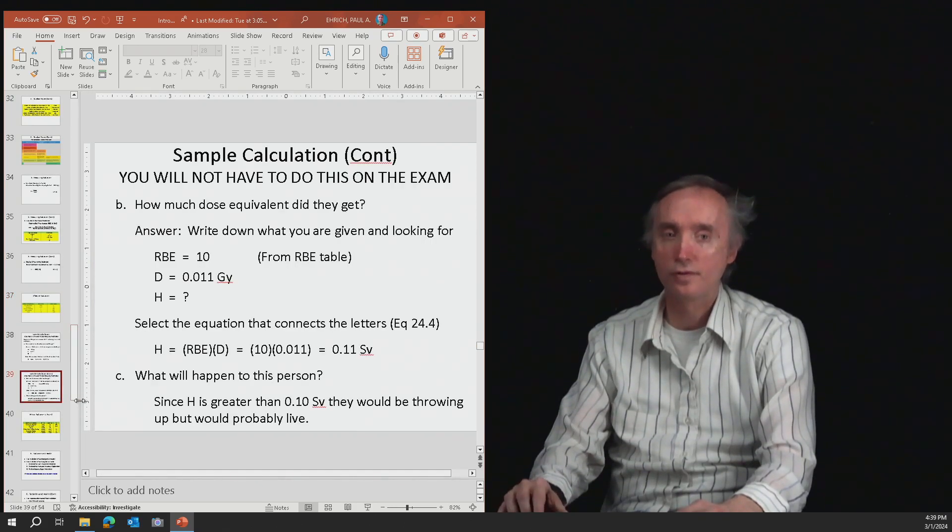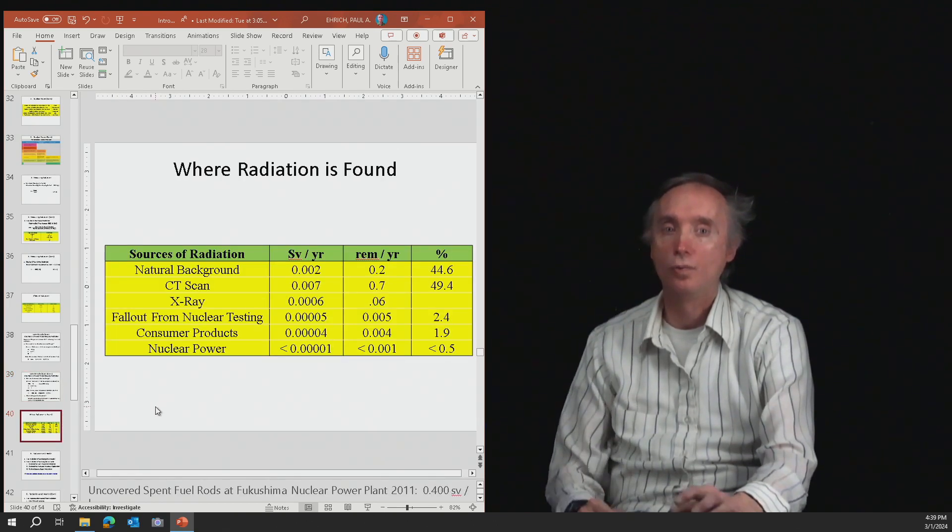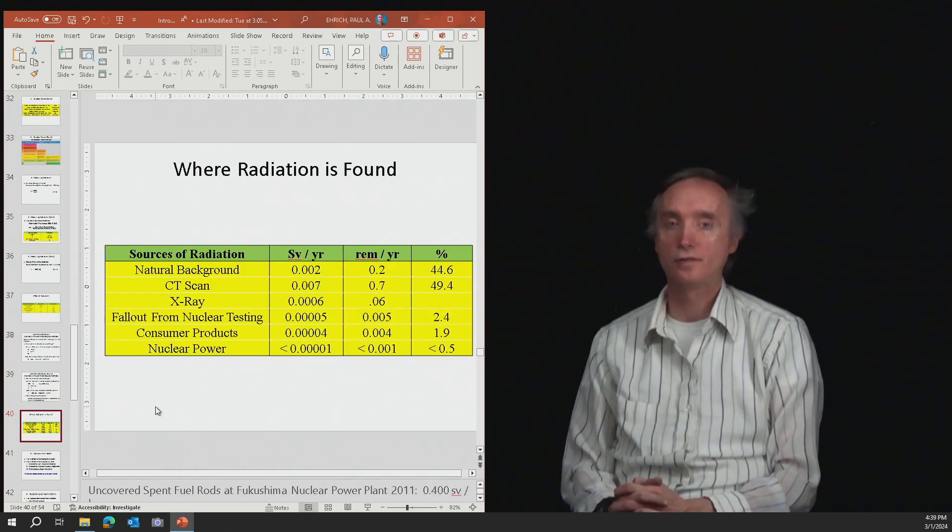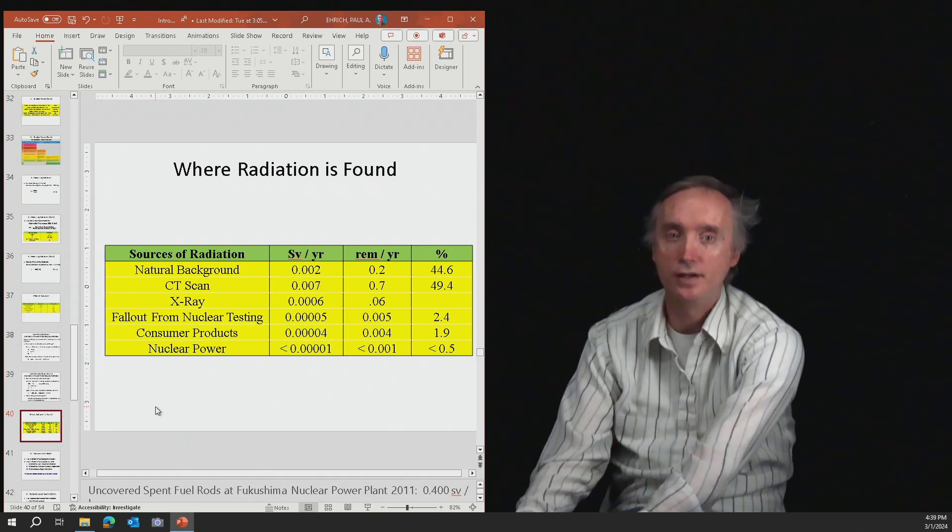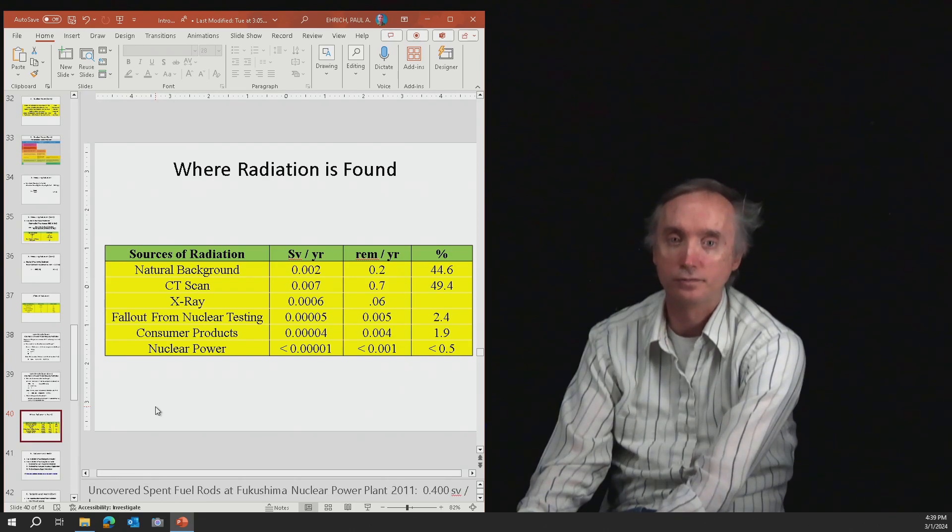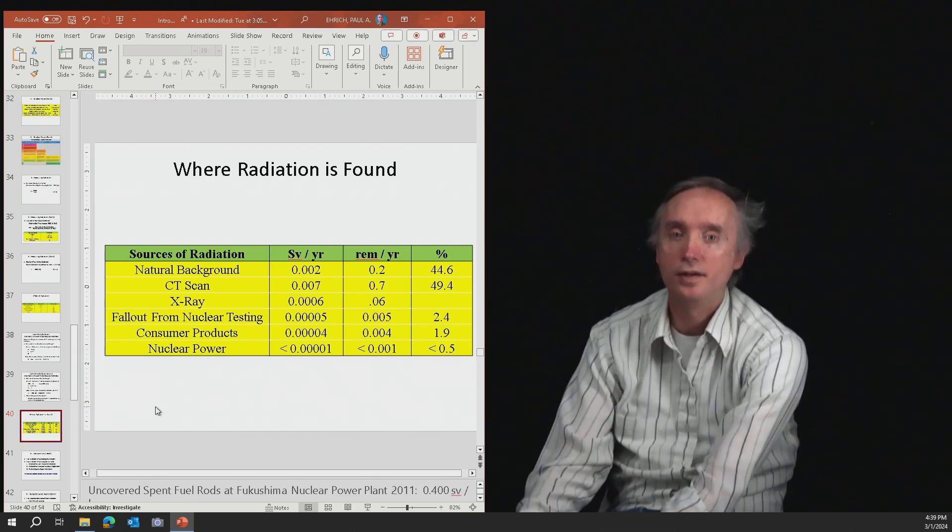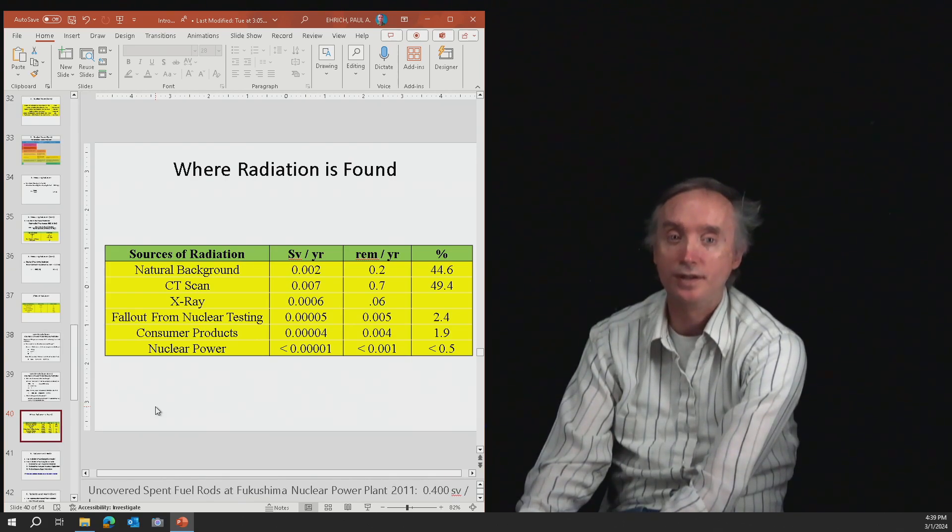All right. Let's do one more thing before we take our break, and that is what are sources of radiation? So here it says that natural background radiation is 0.002 sieverts per year. So this radiation is going to come in from outer space and is also going to be given off by radioactive minerals that are in igneous rocks that are used to make buildings.